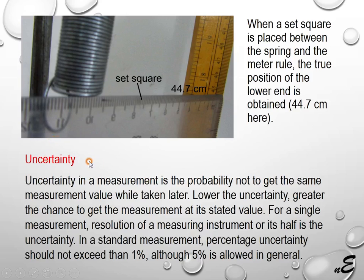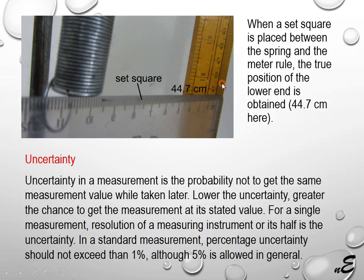Uncertainty is basically a probabilistic concept. Uncertainty in a measurement is the probability of not getting the same measurement value when the measurement is taken later, under the same measuring conditions. For a single measurement, the resolution of a measuring instrument — or half of it — is taken as the uncertainty. We cannot take a measurement more precise than 1 millimeter with a meter rule.